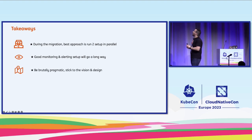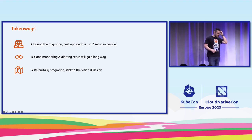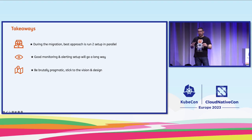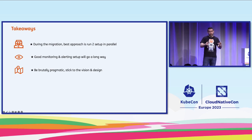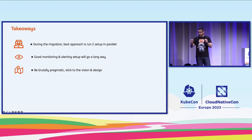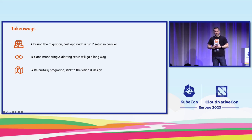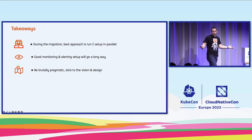Be brutally pragmatic and stick to the vision once the migration starts. We had all kinds of crazy ideas — for example, rebasing all our container base images to a different distribution. Don't do this, because when things fail — and they will fail — you want the blast radius to be as small as possible so you can debug it easier. Trust me, there were a lot of options we could have gone for, and if we did, I wouldn't be here giving this talk — we'd still be busy doing the migration.